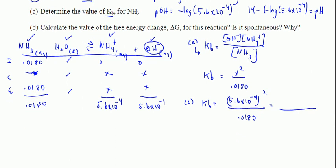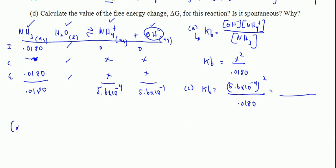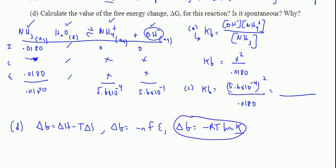Moving on to D, it says calculate the value of the free energy change, delta G. Delta G could either be delta H minus T delta S. Delta G could either be negative N F E. Or delta G could be negative RT ln K. We're going to use this one because we are dealing with equilibrium.